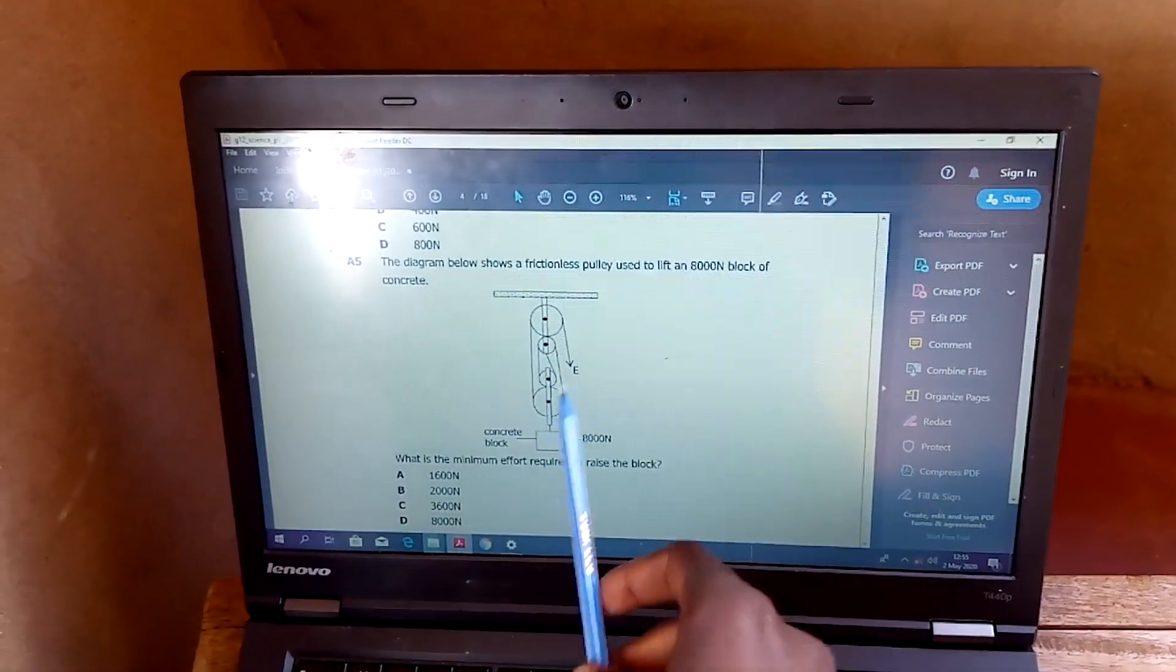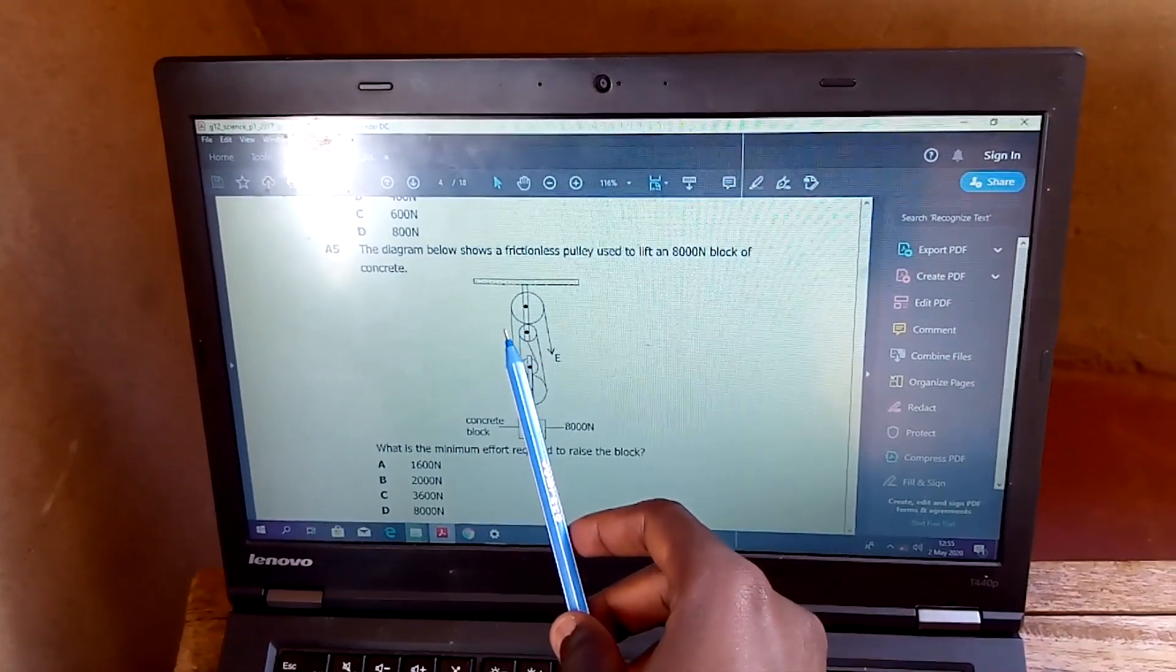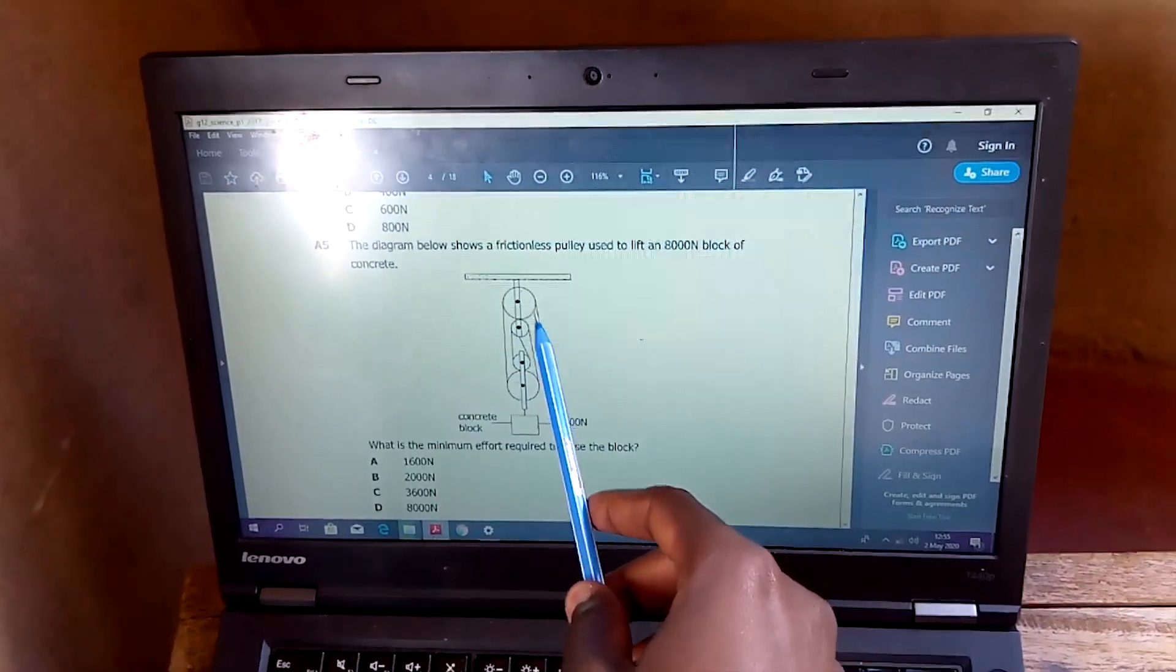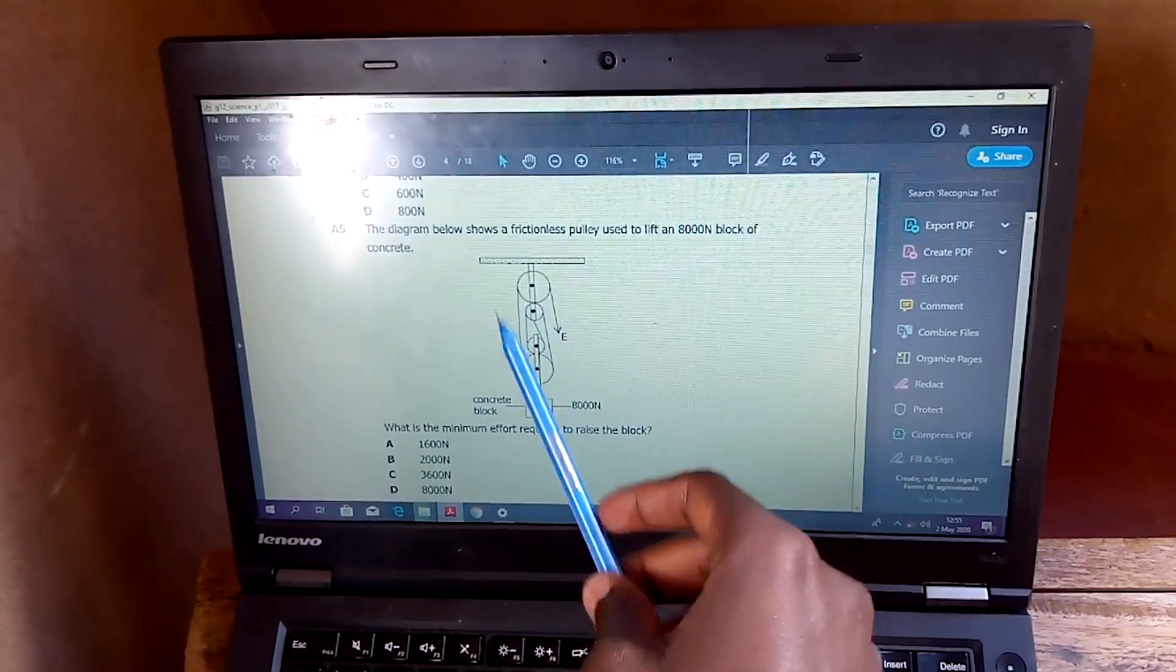But in this case, when you look at the whole system, counting the lines here gives us the velocity ratio. So 1, 2, 3, 4, the lines except this one from the effort. So 1, 2, 3, 4, meaning the velocity ratio is 4.